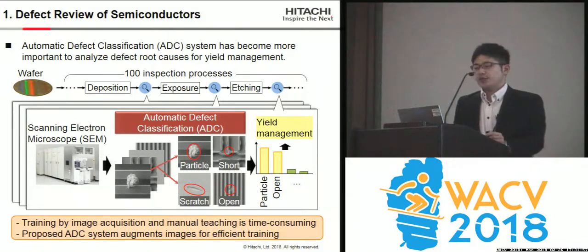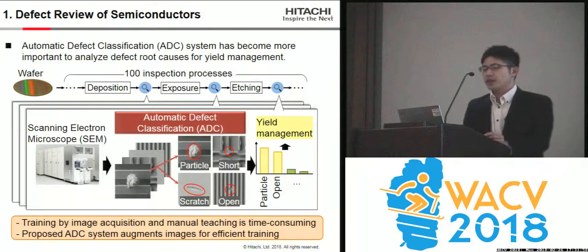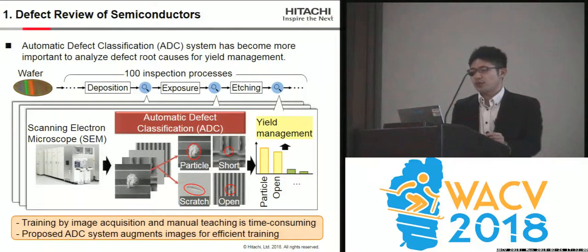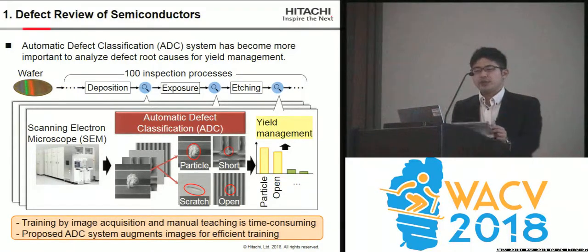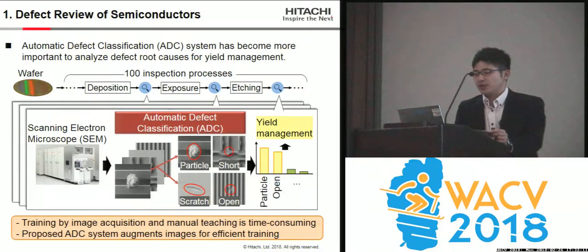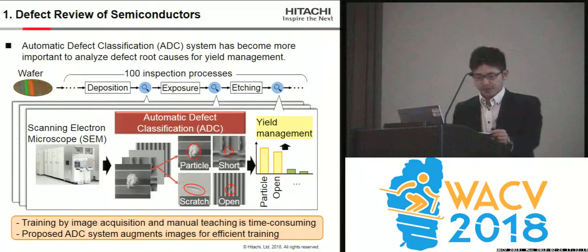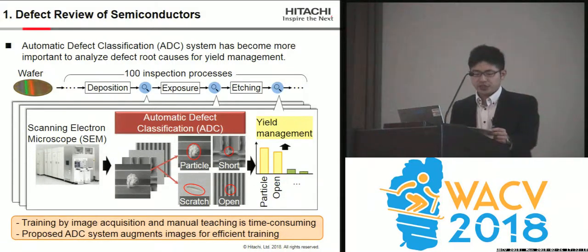The ADC system uses machine learning methods to automatically classify defect images into user-defined defect categories. However, training by image acquisition and manual teaching is time-consuming since every manufacturing process requires the ADC training. So we developed an ADC system that augments images for efficient training.